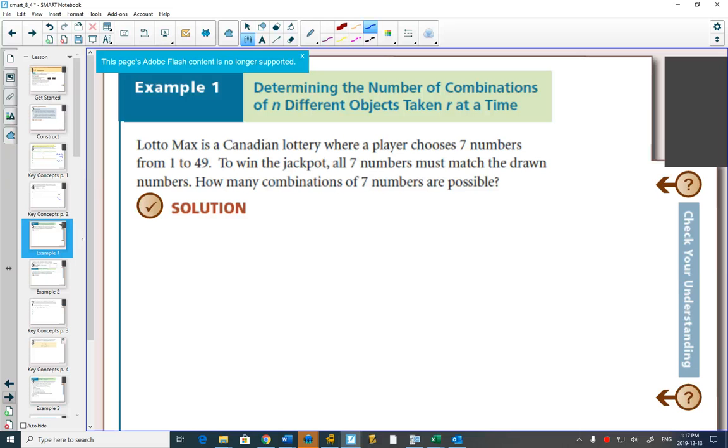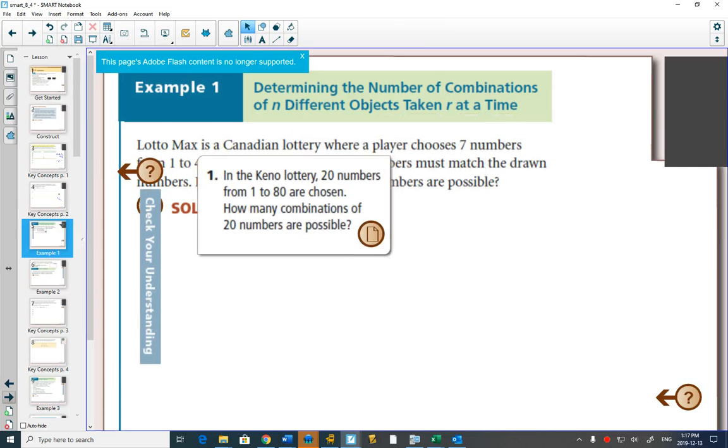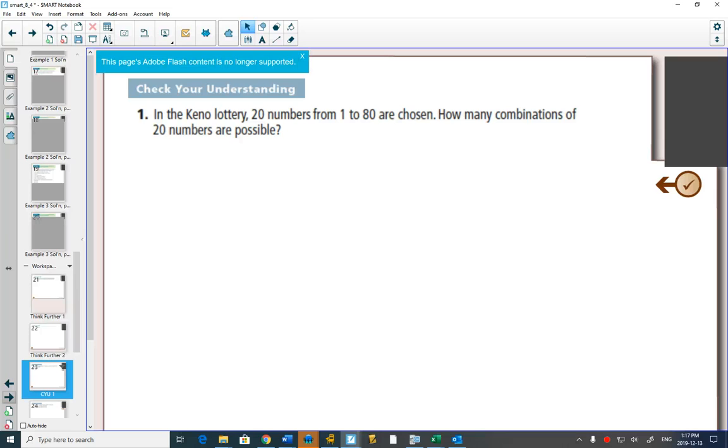So here's our first example. We'll look at some lotteries. In a lot of lotteries, where you pick numbers, the order doesn't matter. If you have the same numbers picked as the winning numbers, even if their numbers are in a different order, it doesn't matter. You win. So here in the Keno lottery, you choose 20 numbers from 1 to 80.